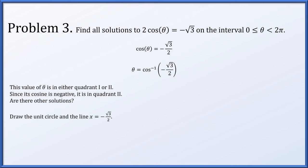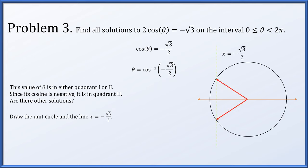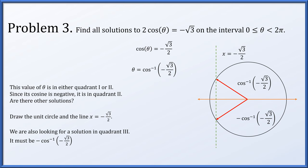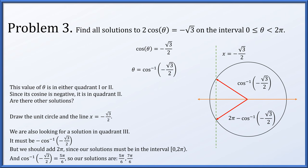Drawing the unit circle and the vertical line x equals minus root 3 over 2 reveals two intersection points — one in quadrant 2 and one in quadrant 3. Arc cosine gives the quadrant 2 solution: arc cos(minus root 3 over 2). The quadrant 3 solution corresponds to rotating clockwise by the same amount, yielding the negative angle minus arc cos(minus root 3 over 2), which we convert to 2 pi minus arc cos(minus root 3 over 2). Since arc cos(minus root 3 over 2) equals 5 pi over 6, our solutions are 5 pi over 6 and 7 pi over 6.